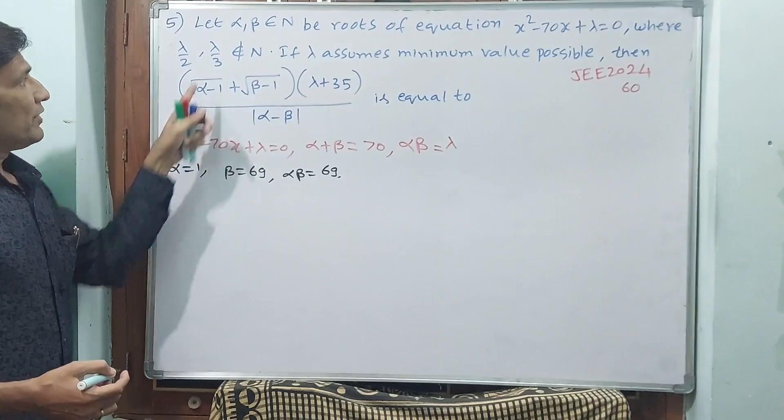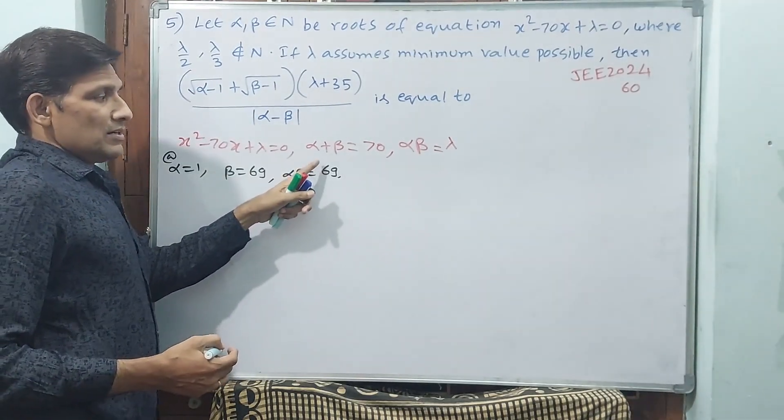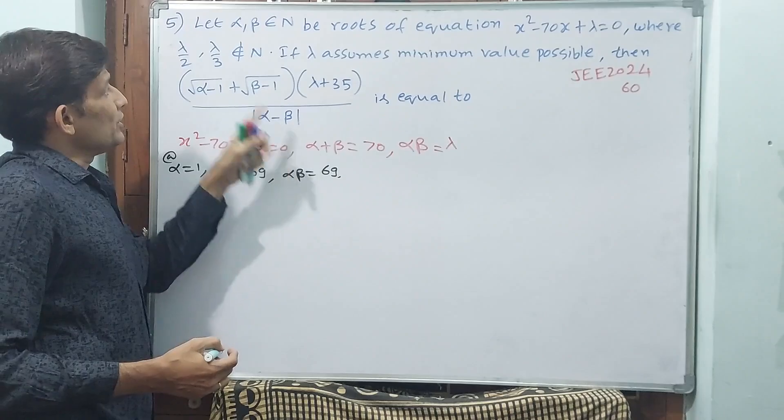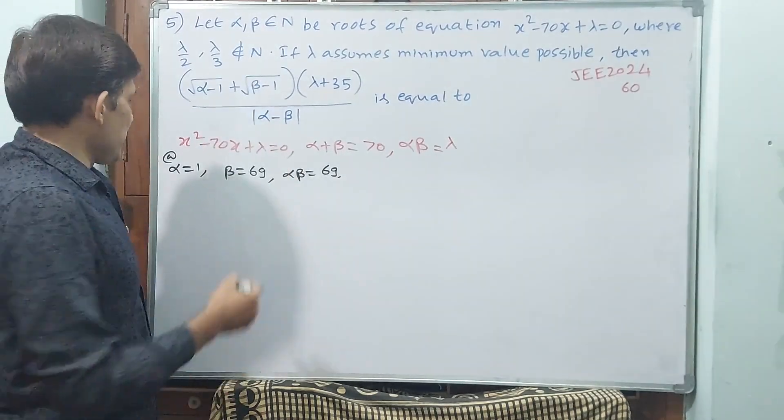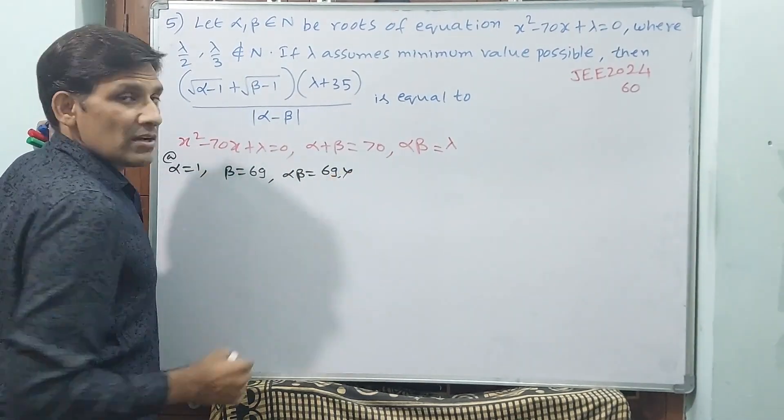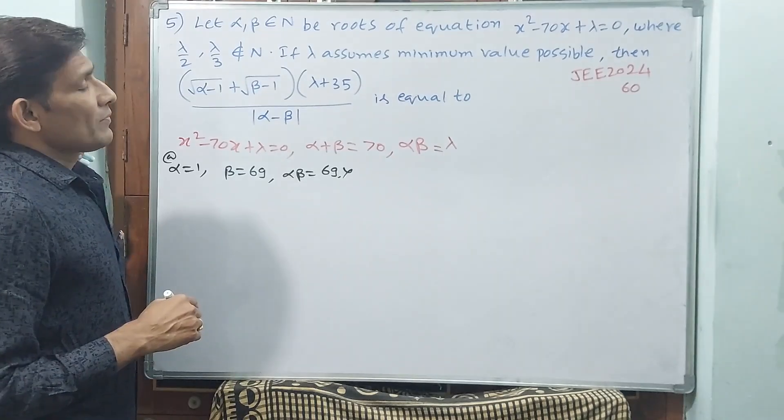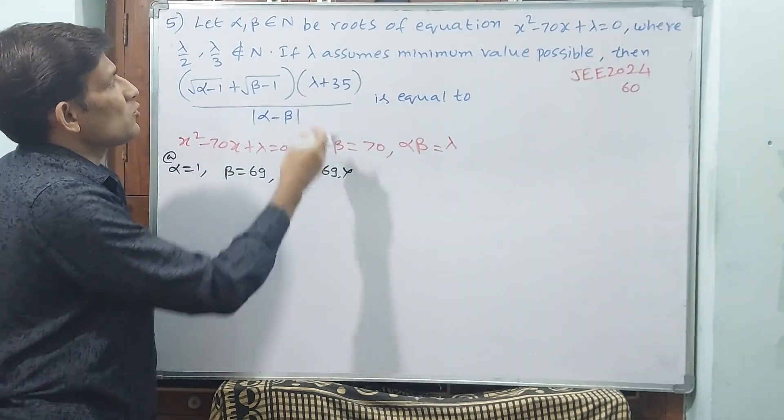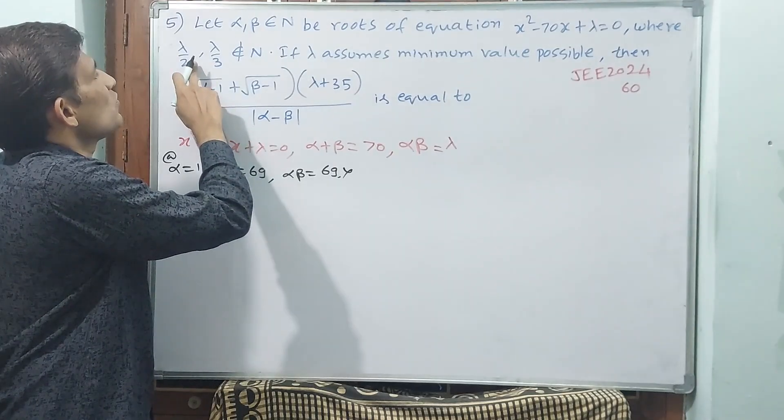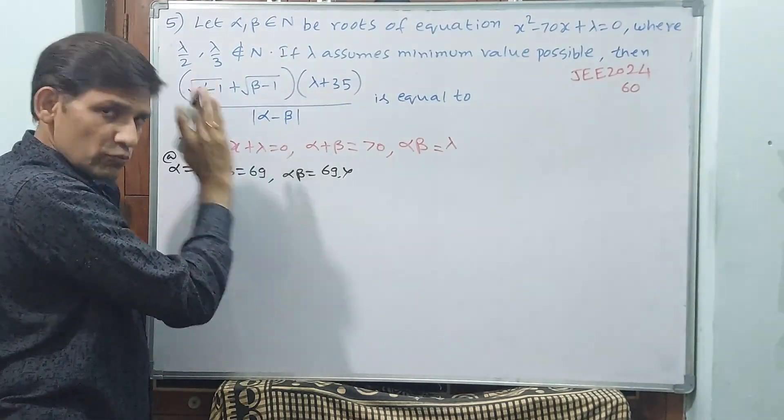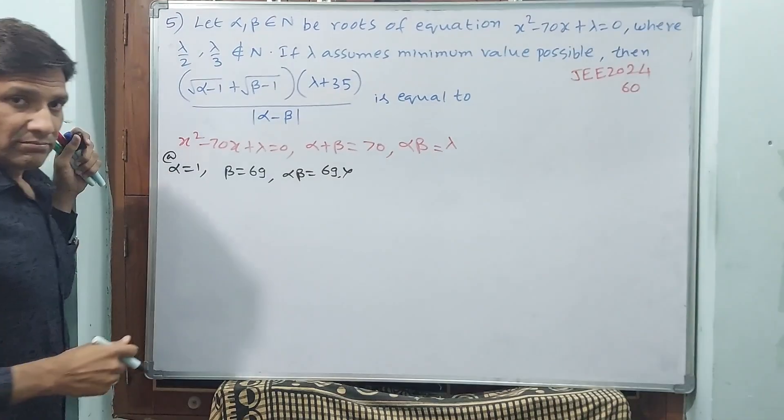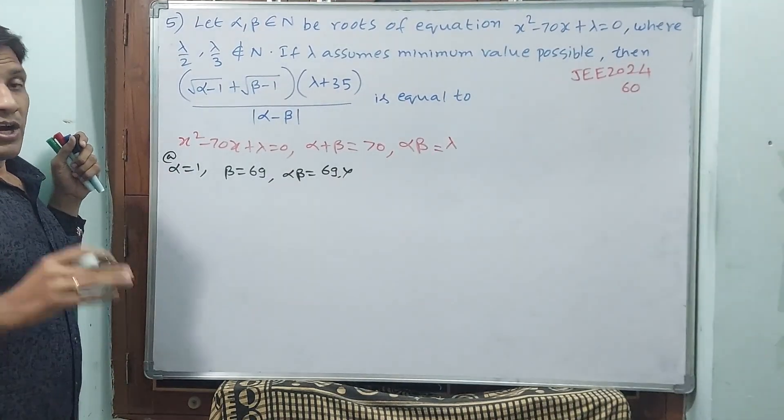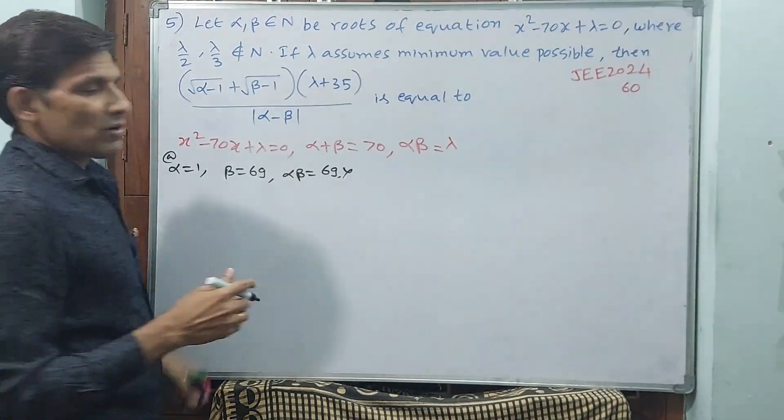When you divide by 3, you get 23, which is a natural number. That is why α = 1 is not possible. Now, 2, 3, 4 you should not go. Why? Because if you go 2 and 3, you should not take. Even if you take 4, 2 is there, divisible by 2. Now minimum α you have to take is 5.